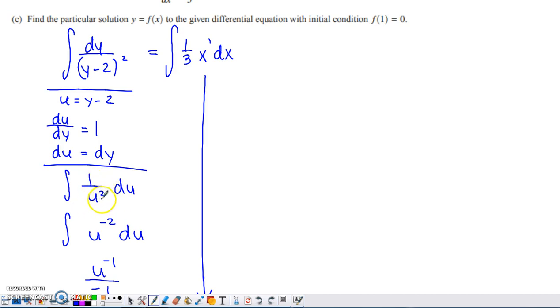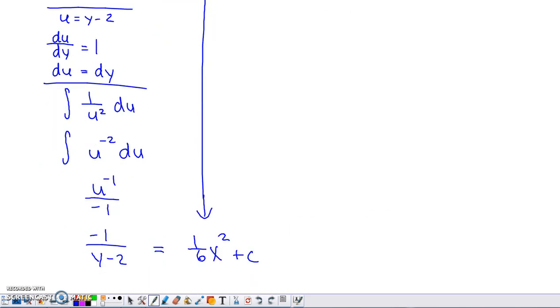They do natural log so often whenever they are doing separable differential equations. A lot of the time, I would expect to see natural log of the absolute value of u squared. You actually don't need that formula here. This can be rewritten as u to a power. It's u to the negative second. And then, you can just use the power rule to find that antiderivative. Add one to the exponent, divide by the new exponent.